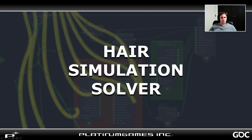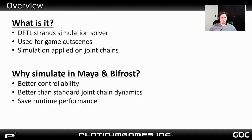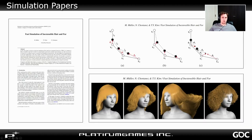So let's start our first topic, which is about our hair simulation solver. Our solver is a DFTL strand simulation solver which we use for game cutscenes. We simulate strands but apply the result onto joint chains. We use Maya and Bifrost to have better accountability over the simulations. Since we bake the result onto joints, we can simulate at a higher resolution and get a better result than when using the standard joint chain dynamics from our in-house engine. The dynamic solver is implemented using a dynamic folder leader method to simulate inextensible hair. It works almost like a traditional position-based dynamic solver, except that it introduces a velocity correction term. While not being as physically plausible as traditional PBD, it's still perfectly viable for our use case.